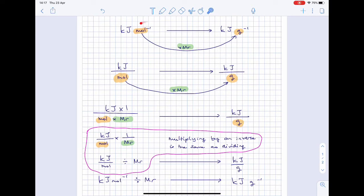However, the moles is an inverse mole in kilojoules per mole, so we can't just multiply the whole of this by MR. We only multiply the moles, which is underneath the kilojoules.